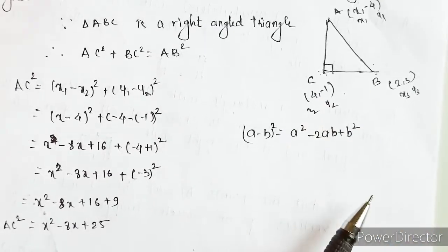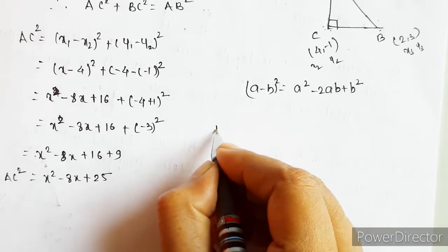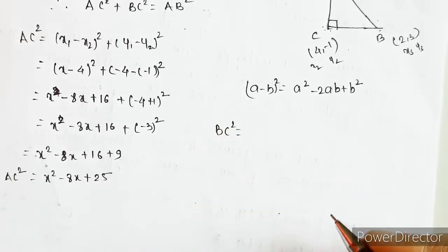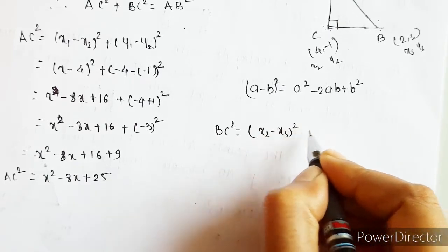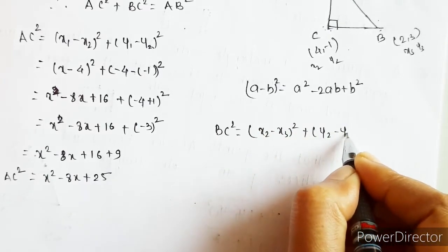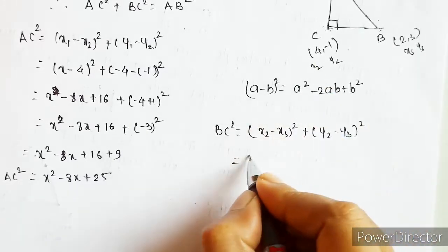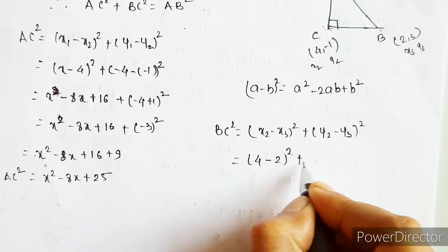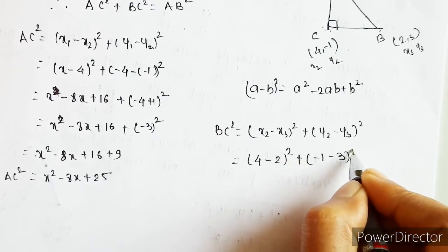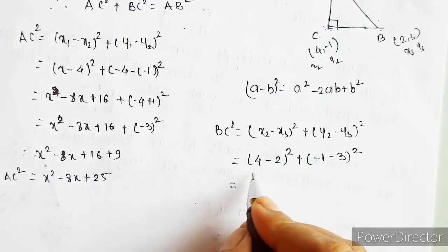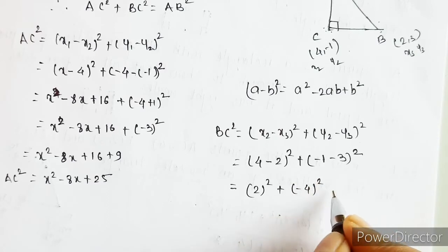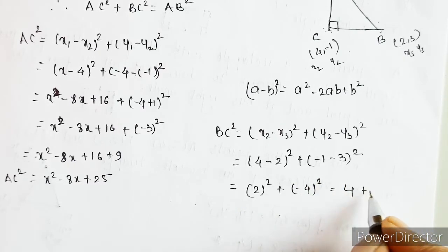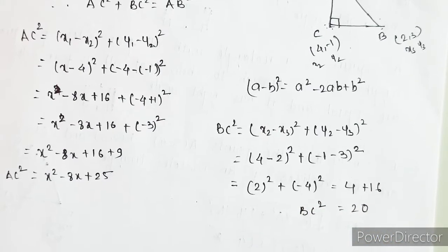Similarly, we need to find BC². BC² = (x2 - x3)² + (y2 - y3)². Here x2 is 4, x3 is 2, y2 is -1, y3 is 3. So this is (4 - 2)² + (-1 - 3)² = 2² + (-4)² = 4 + 16 = 20. So BC² = 20.